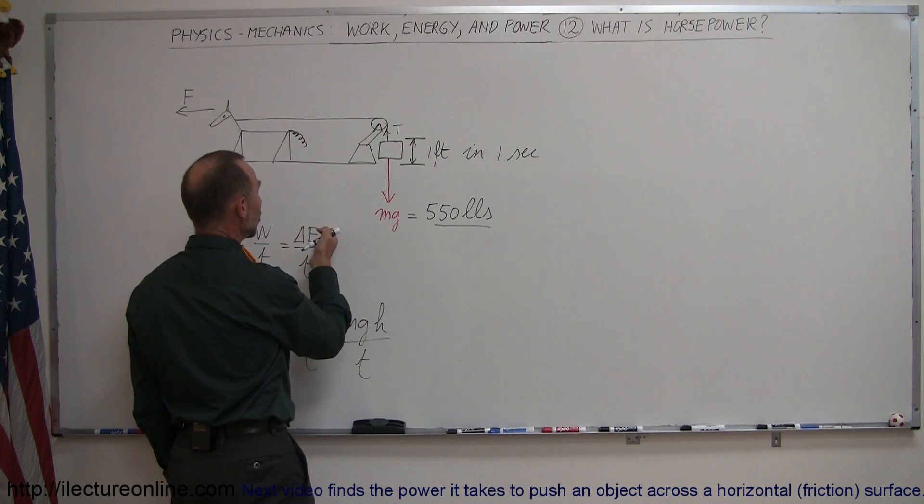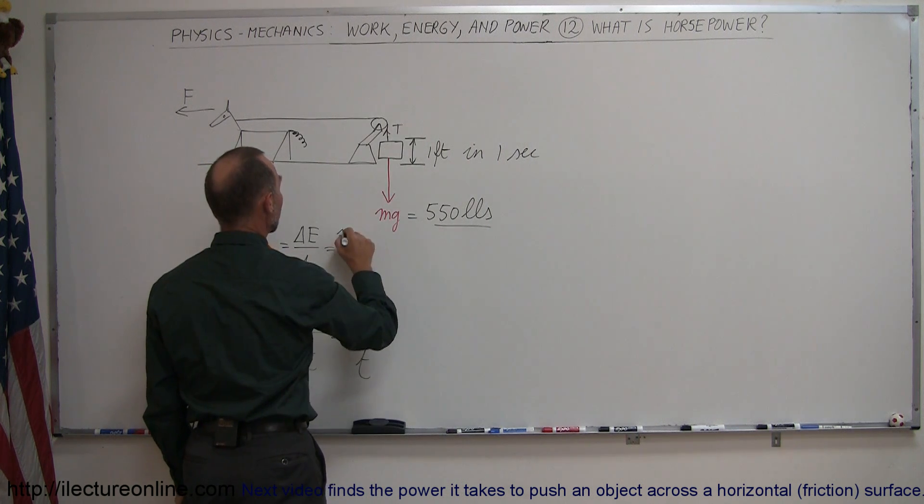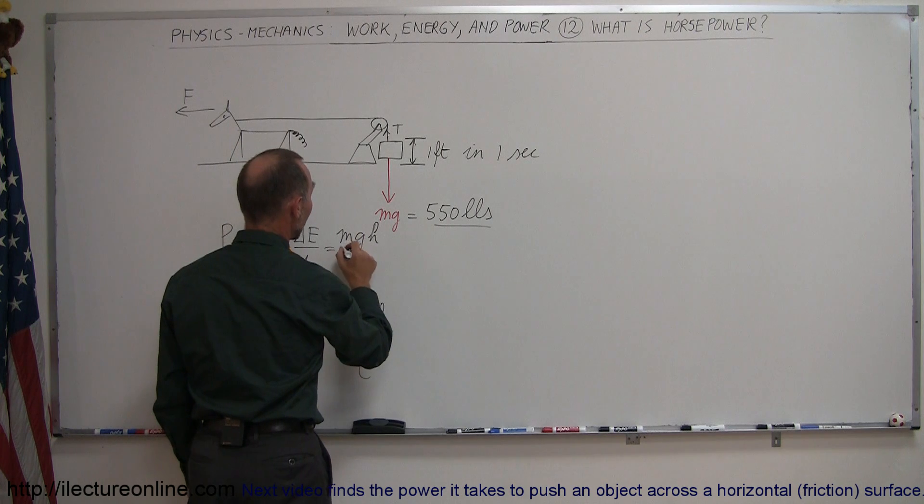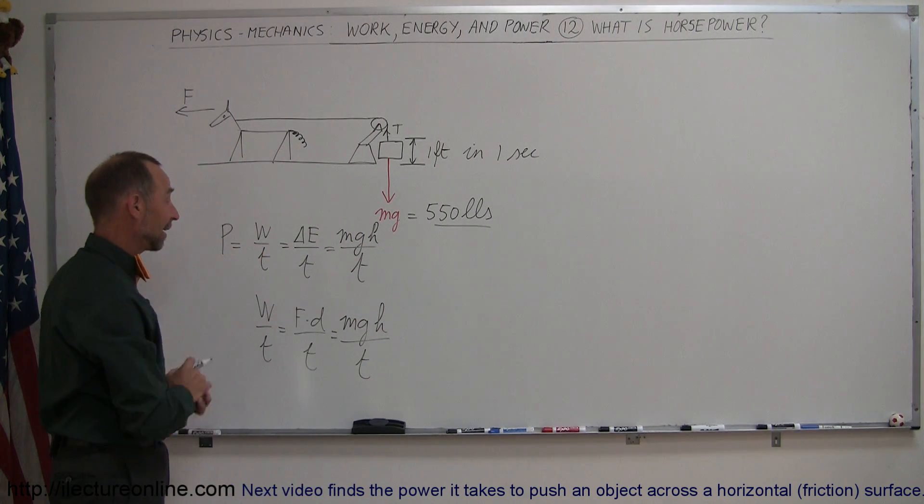And so in this case we could say well the change in the energy went from being on the ground to one foot above the ground, that would be an increase in energy of potential energy in this case, mgH over time. So either way you look at it you get the exact same equation.